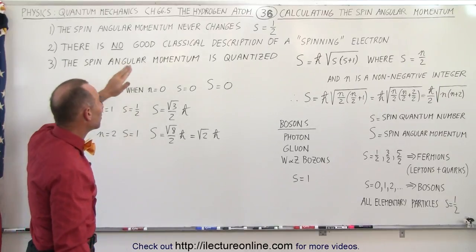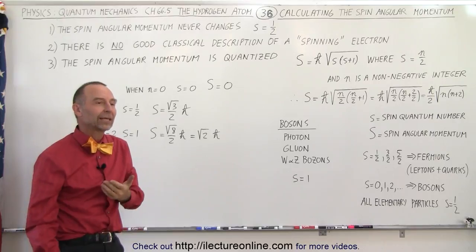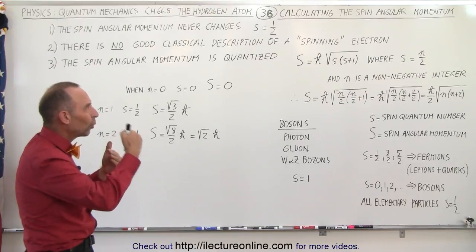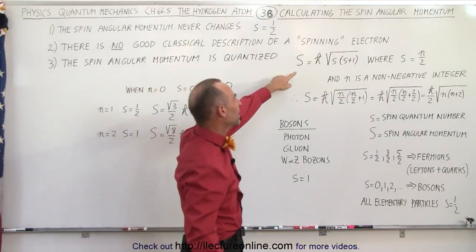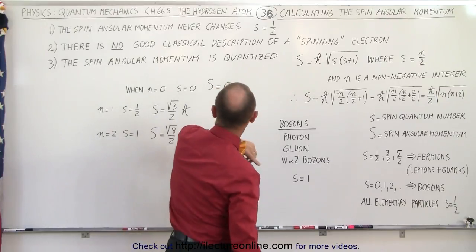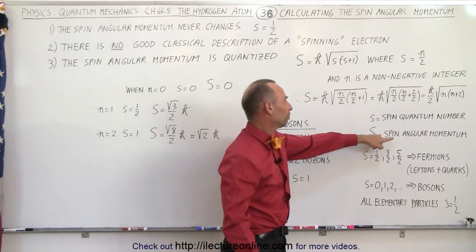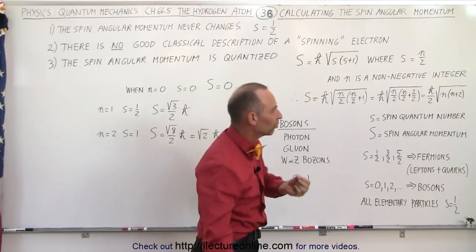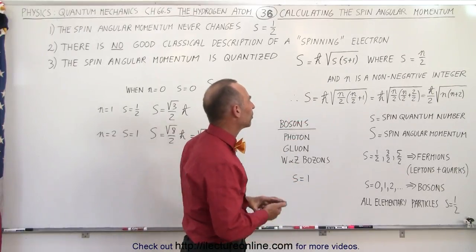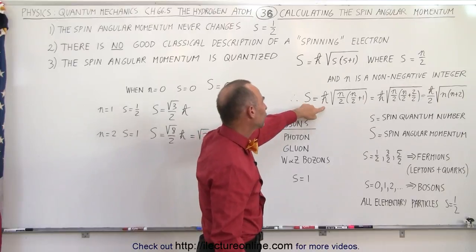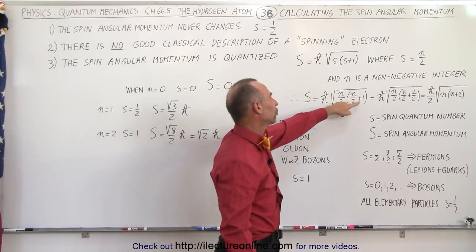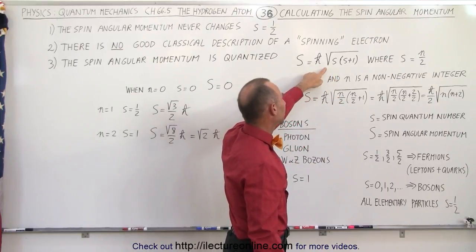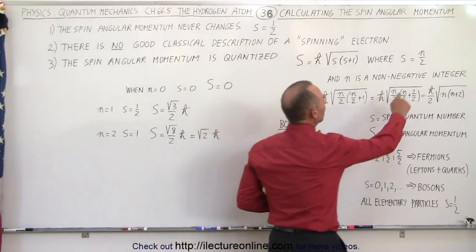And then finally the spin angular momentum is also quantized just like the orbital motion angular momentum, the spin angular momentum also has quantized values and it's calculated by this right here. S, the capital letter S, is the spin angular momentum and the small s is the spin quantum number. The large S is the spin angular momentum and is defined by S equals h-bar times the square root of s times s plus one where s is equal to n divided by 2.